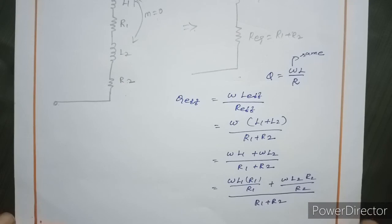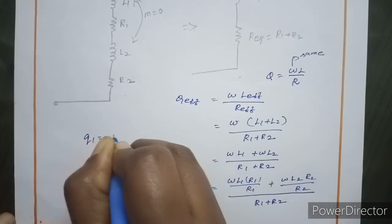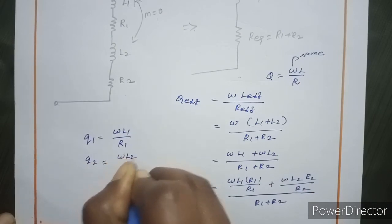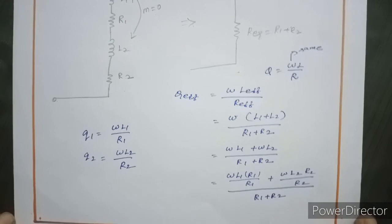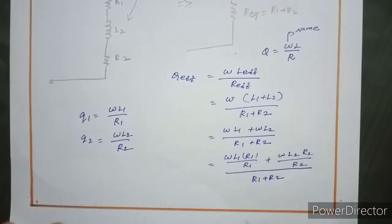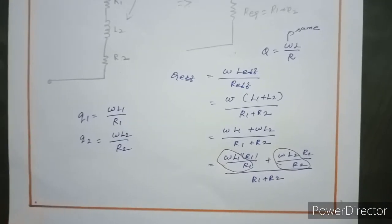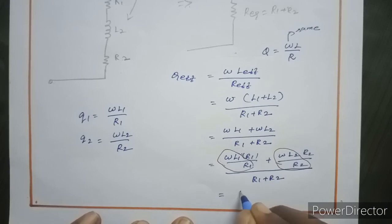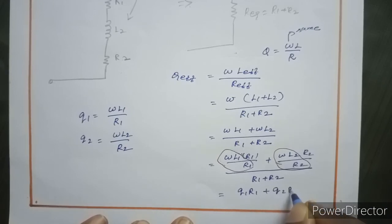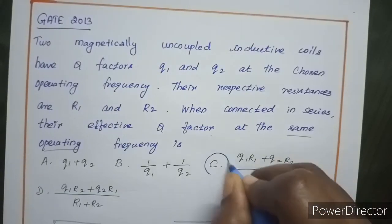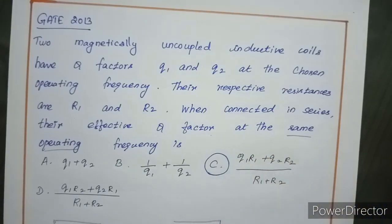Now, Q1 equals omega L1 by R1 (first coil Q factor) and Q2 equals omega L2 by R2 (second coil Q factor). Substituting, omega L1 equals Q1 R1 and omega L2 equals Q2 R2. So the effective Q factor equals (Q1 R1 plus Q2 R2) divided by (R1 plus R2). The answer is option C: Q_eff = (Q1·R1 + Q2·R2) / (R1 + R2).